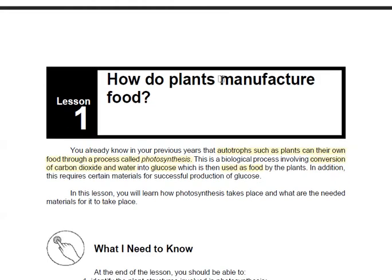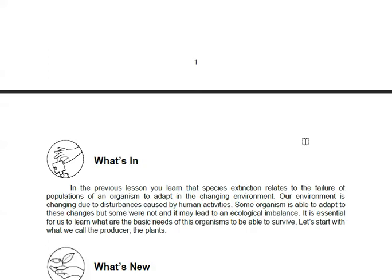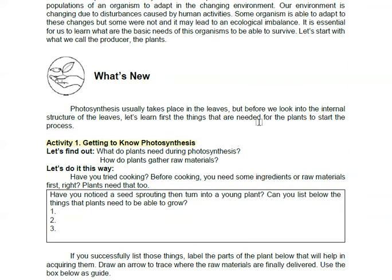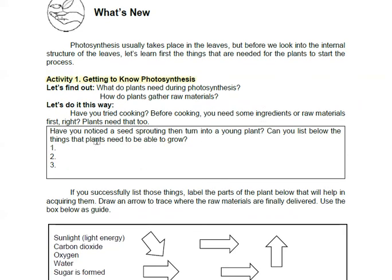And then we continue with lesson 1. How do plants manufacture food? So plants can make their own food through a process called photosynthesis. This biological process involves conversion of CO2 and H2O into sugar or glucose, and then this is then used as food by the plants. So let's continue. Answer your first activity, Getting to know photosynthesis. Find out what do plants need during photosynthesis and how do plants gather raw materials? Have you noticed a seed sprouting then turned into a young plant? Can you list below the things that plants need to be able to grow? So list down three things.